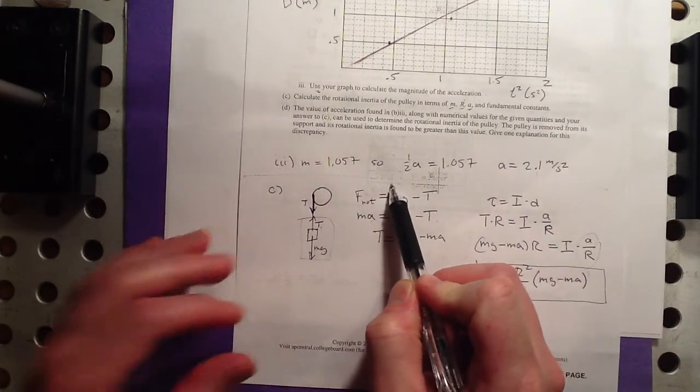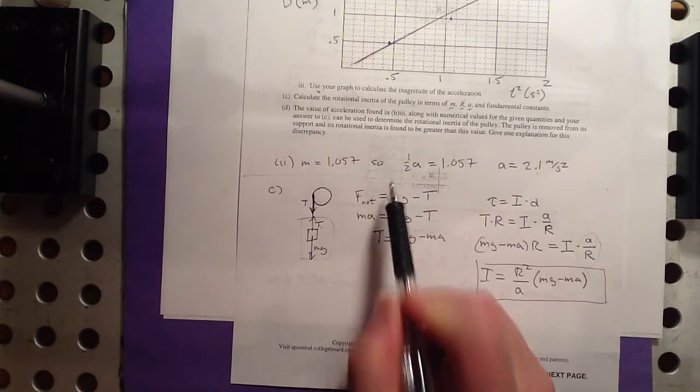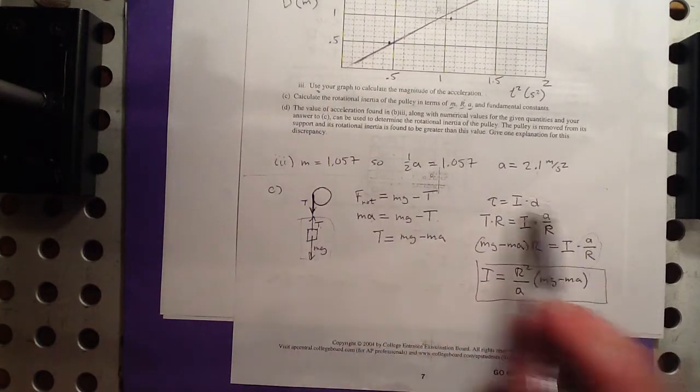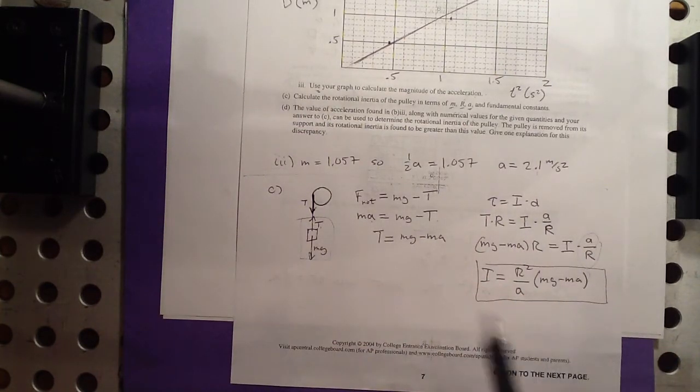But by the way, if you had got everything right up to here, which was relatively straightforward, that's 9 out of the 15 points, you've almost doubled the average there already. This is icing on the cake, so to speak.